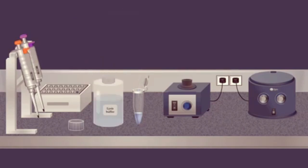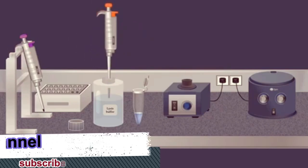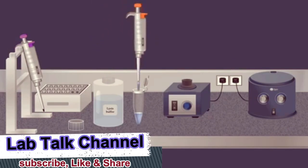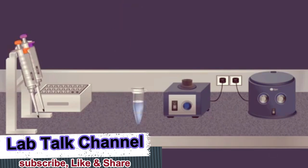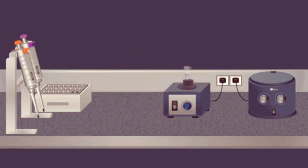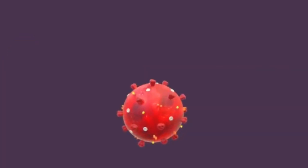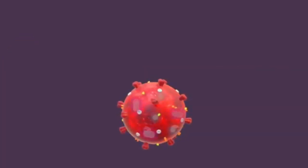This buffer is highly denaturing and is usually consists of phenol and guanidine isothiocyanate. Also, RNase inhibitors are usually present in the lysis buffer to ensure isolation of intact viral RNA. Once the lysis buffer is added, the tube is mixed by pulse vortexing and incubated at room temperature. Then the virus is lysed under the highly denaturing conditions provided by the lysis buffer.